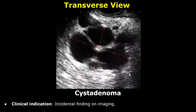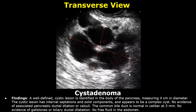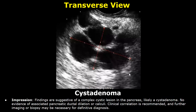Our next case is cyst adenoma. The clinical indication can be an incidental finding on imaging. Its findings include a well-defined cystic lesion usually identified in the body of the pancreas. The cystic lesion has internal septations and solid components, appearing to be a complex cyst. Impression: findings are suggestive of a complex cystic lesion in the pancreas, likely a cyst adenoma. Clinical correlation is recommended, and further imaging or biopsy may be necessary for definitive diagnosis.